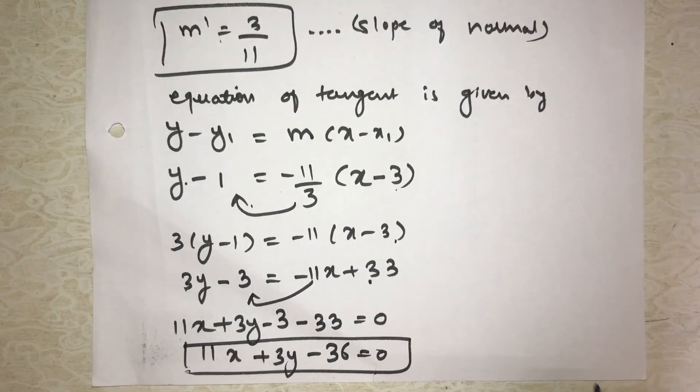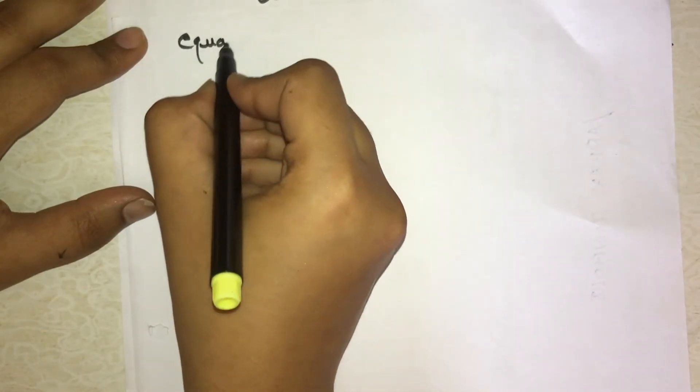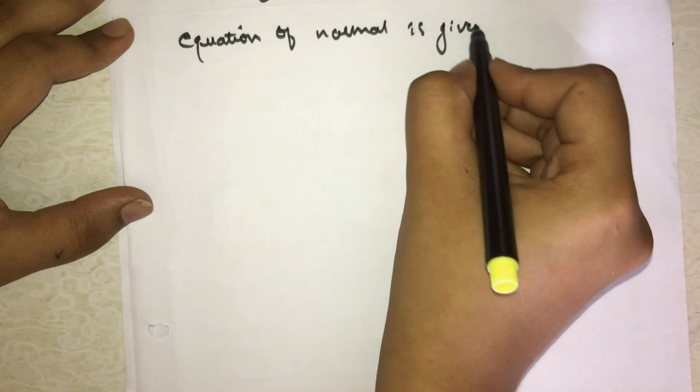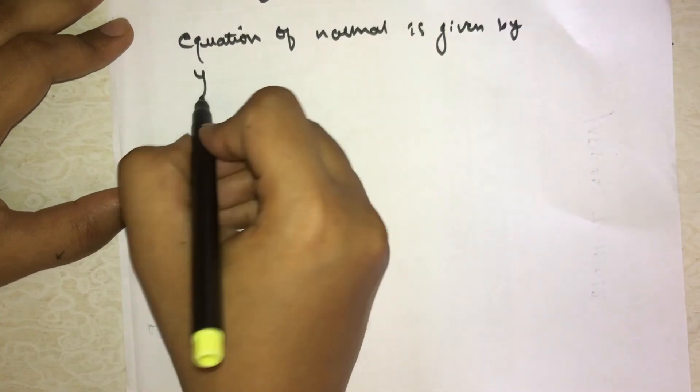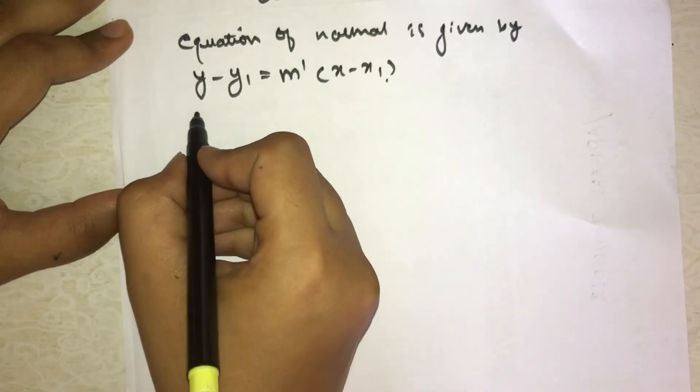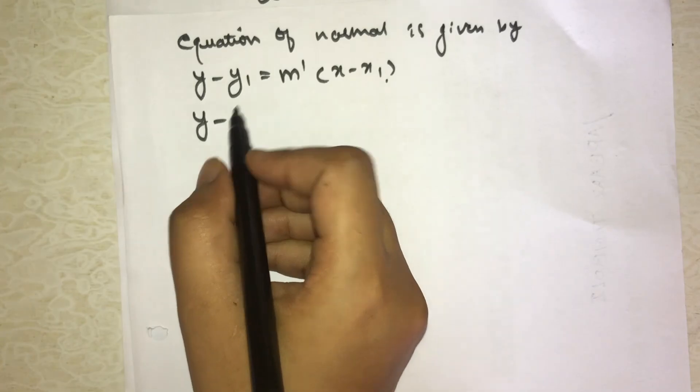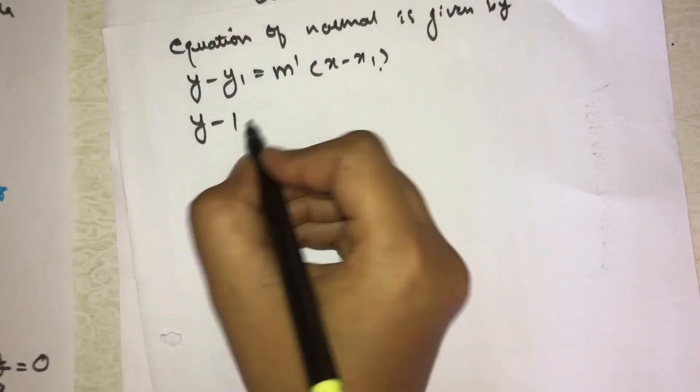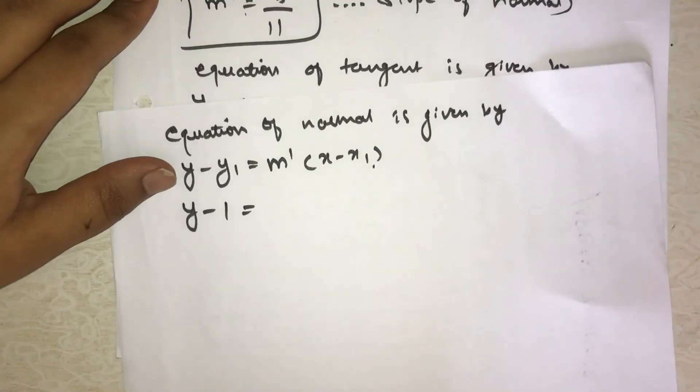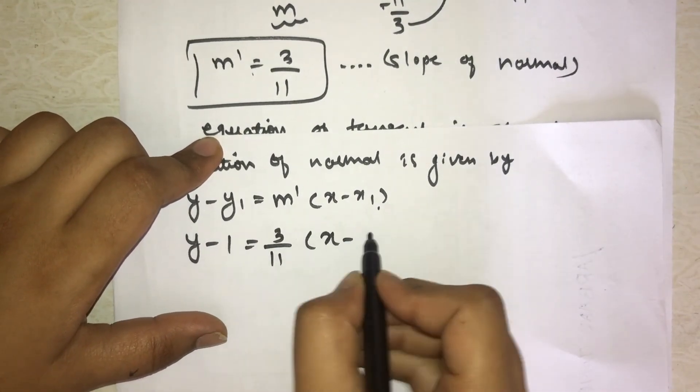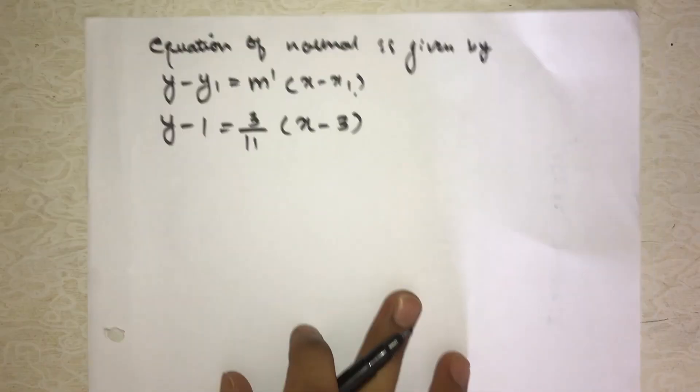Now last what remains? Equation of normal. So equation of normal is given by: we saw the difference between equation of normal and equation of tangent - everything same except here in place of m we have m dash. Then x - x1. y - y1 is given. y1 is 1, equal to m dash which is 3/11, then x - x1 which is given as 3.